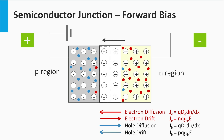First, we consider a p-n junction in the dark and we apply a forward bias on the device. This means we have a more positive voltage at the p-region side than at the n-region side. The depletion zone is the area where the built-in electric field is present. It is also the zone with the highest resistivity, and the applied external bias will create an additional electric field at the depletion zone, indicated by the green arrow. This additional field is opposite to the built-in electric field, indicated by the black arrow.